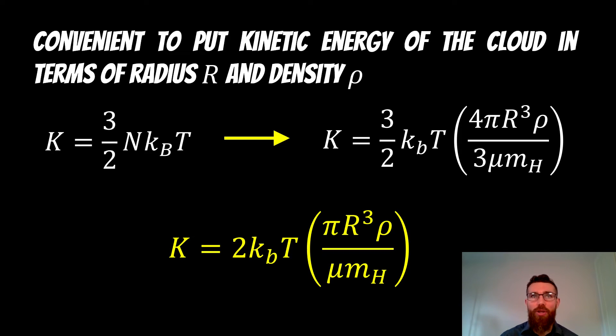If we think about the number of particles in a cloud, it's going to relate to its radius, its density, the mass of an individual particle, and the mean mass of those particles. Once we've considered that and exchanged the N and put it in terms of the radius and density, we can have that expression on the right. The final expression for the kinetic energy is given at the bottom in the yellow. That's what we want to put back into that equation.